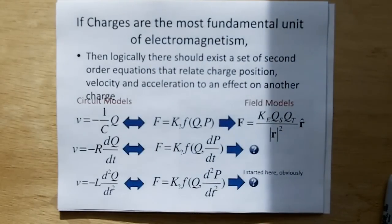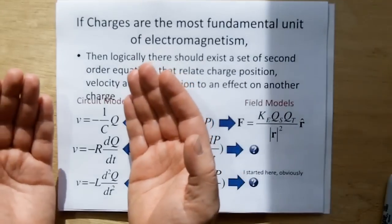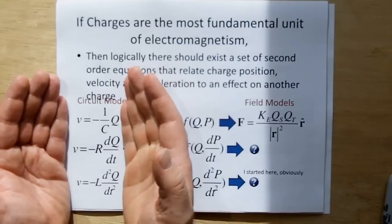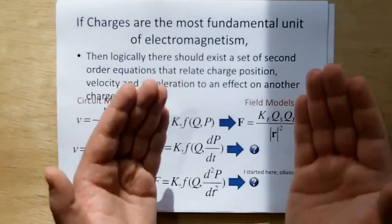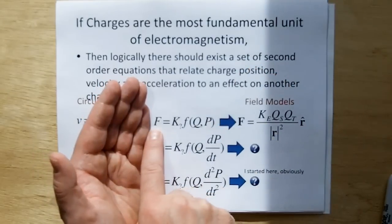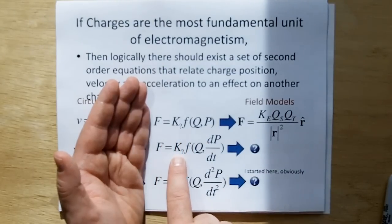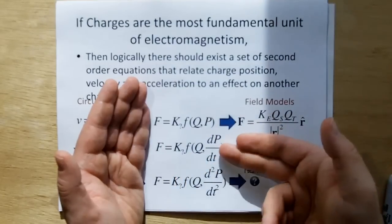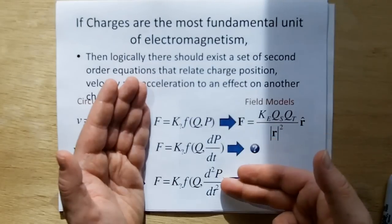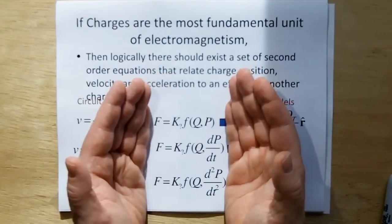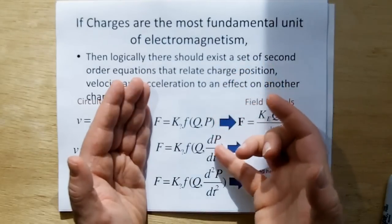So, but one thing that we have to have if we're going to do this is we need force models for individual charges. Conceptually, these are circuit models that we showed before. These circuit models work on individual charges, groups of charges. So then logically, there should exist field models that apply among point charges. And this is a fancy notation for saying that there should exist a force where a constant times a function of charge and position, another force where some constant times a function of charge and velocity. So the first derivative of position is velocity. And the second order derivative of position is acceleration. So we should have a second order. If we've got a second order system in circuits, we should have a second order system that relates charge to the second order effects of position, velocity, and acceleration.